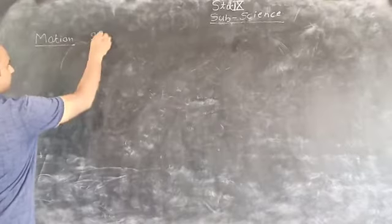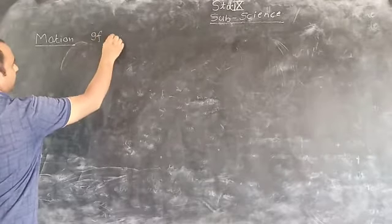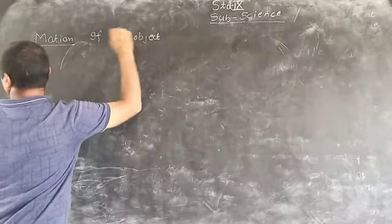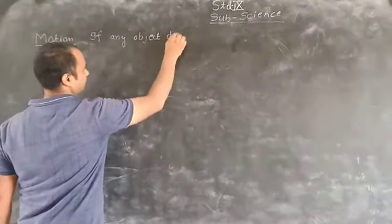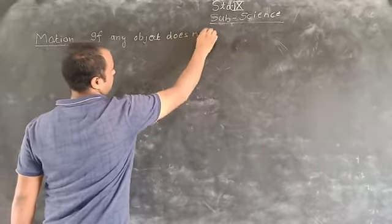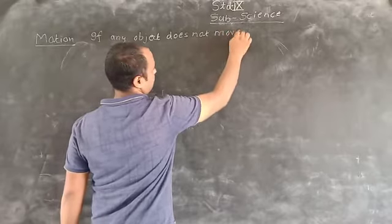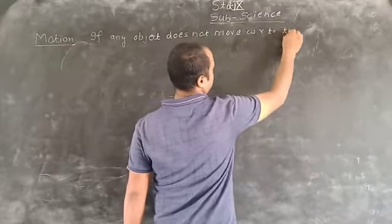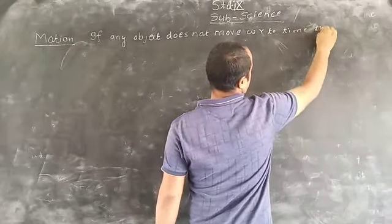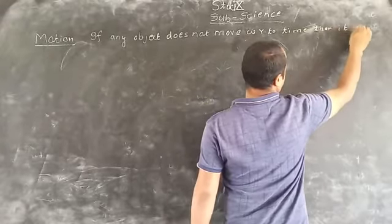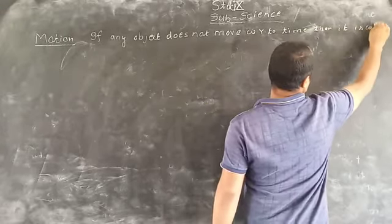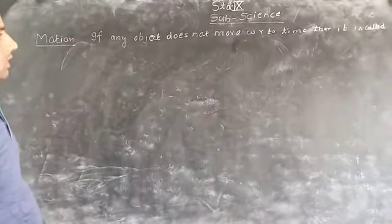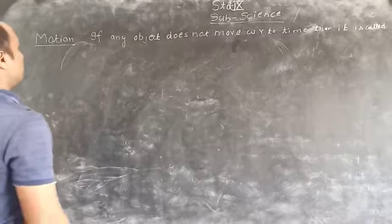If any object does not move with respect to time, it is called rest. Does not move with respect to time, it is called rest.